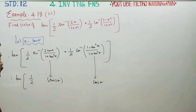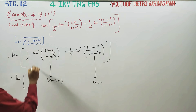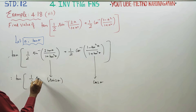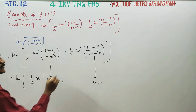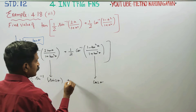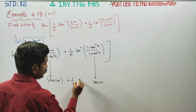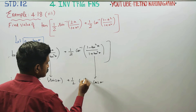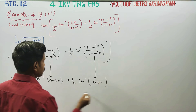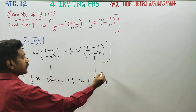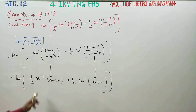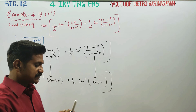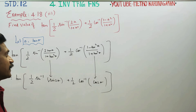Refer to 11th book trigonometry. Now applying sin inverse — sin will cancel. Then cos inverse — cos will cancel. The 1/2 factors remain.